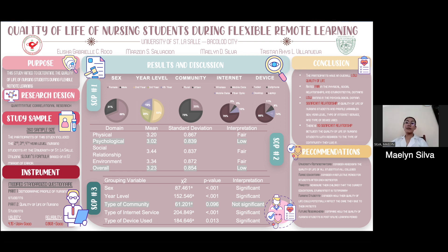Regarding the level of quality of life of nursing students, their quality of life is considered to be fair in the physical, social relationship, and environmental domains. However, they have a low quality of life in the psychological domain. Overall, nursing students have a generally low quality of life during flexible remote learning, implying that they may not be satisfied with the current education they are receiving.